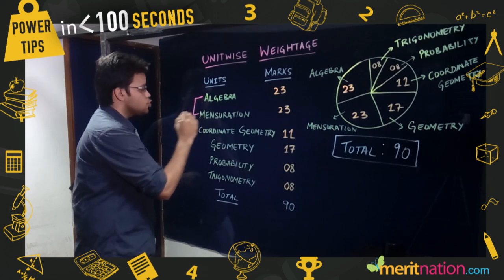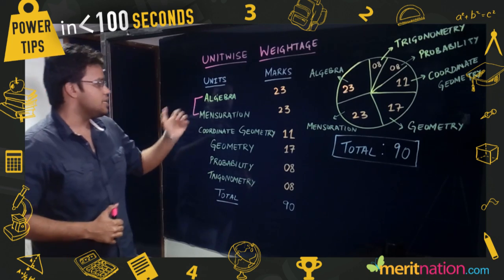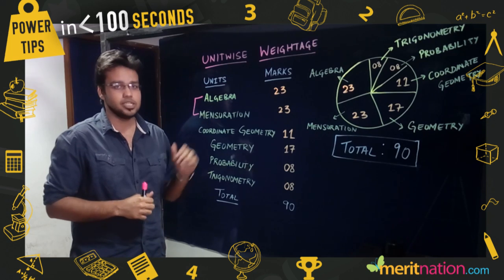algebra and mensuration are your two vital units as they comprise of more than 50 percent of your marks. So out of algebra and mensuration, you can expect three to four very long answer type questions from these two units.